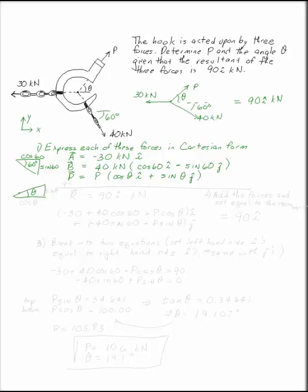Now each of these three vectors has to add up to R, where R is 90i kilonewtons. To add up these forces, what we're going to do is add up the i's, add up the j's, and set them equal to R.